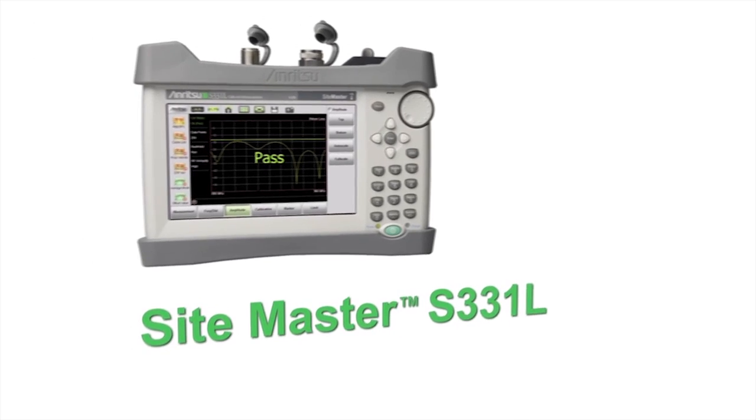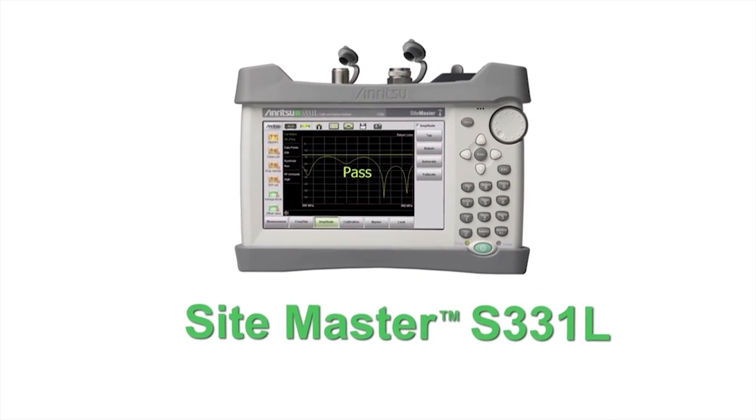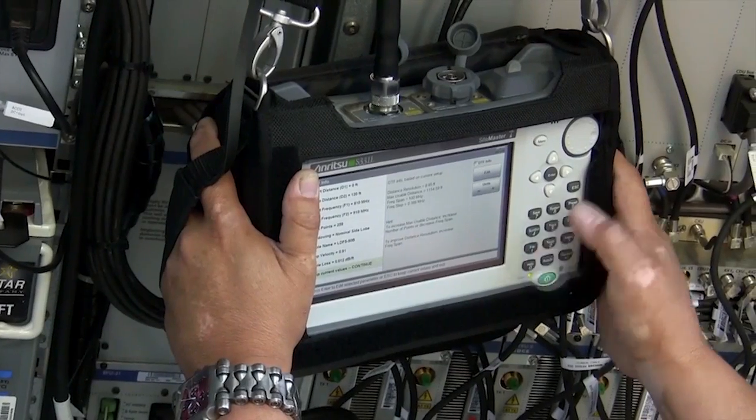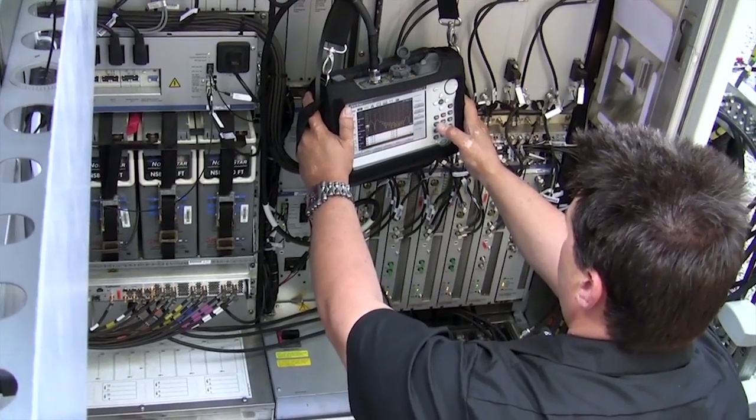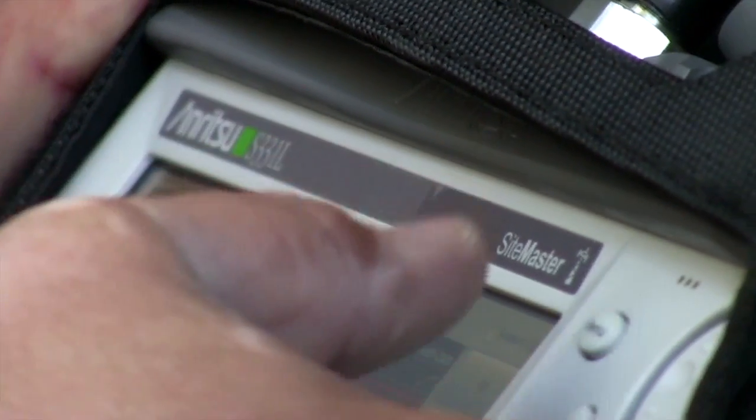Enritsu's SightMaster S331L represents the latest in technological advancements at a very competitive price. In fact, we believe the S331L is the best value on a handheld cable and antenna analyzer, period.